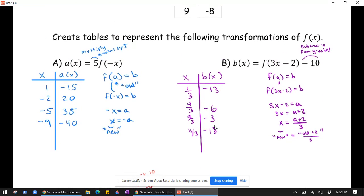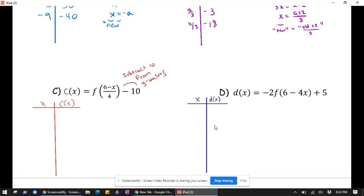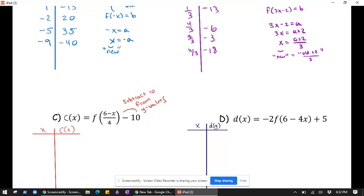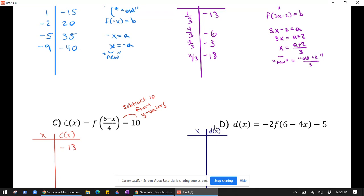Actually, if you think about it, I just minus 10 on both of these, so I'm just copying down what I did above: negative 13, negative 6, negative 3, and negative 18.